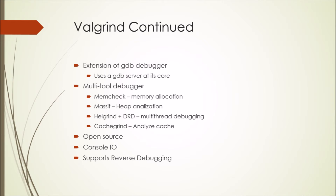Like GDB, Valgrind is a console IO debugger, meaning that all input and output is handled by the console, not through a graphical user interface. And it also supports reverse debugging, just like GDB does.